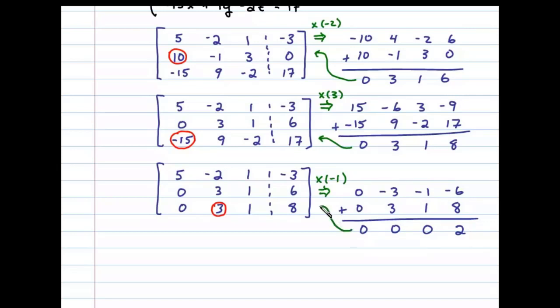This leaves us with a matrix in upper triangular form. Now I notice the third row represents coefficients of 0 and a constant of 2. When this is the case, we can recognize that the original system is inconsistent.